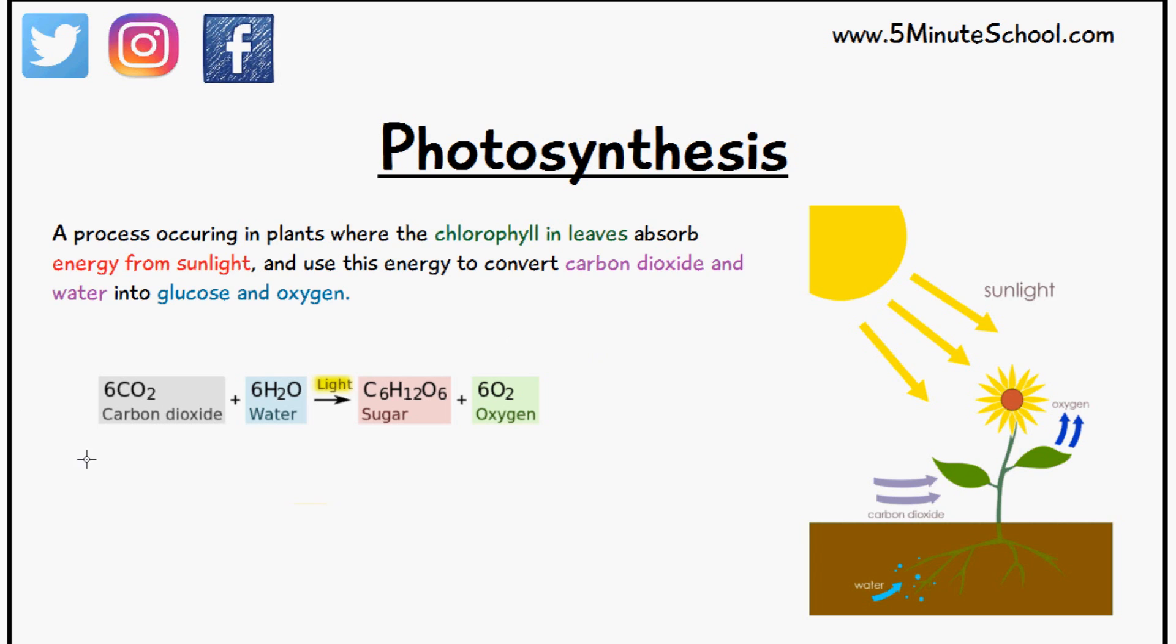So the equation for this is carbon dioxide plus water using the energy from sunlight gives glucose or sugar and oxygen. This is the main principle behind photosynthesis. However, there are some factors which affect the rate of photosynthesis, and these are called rate limiting factors.